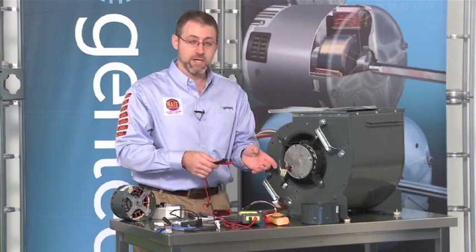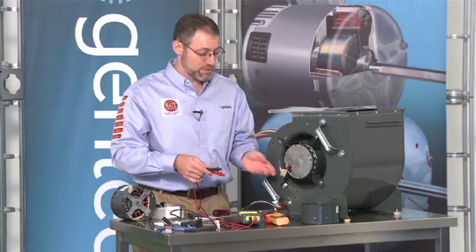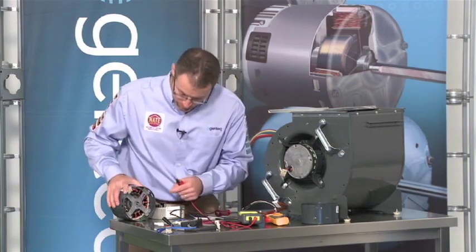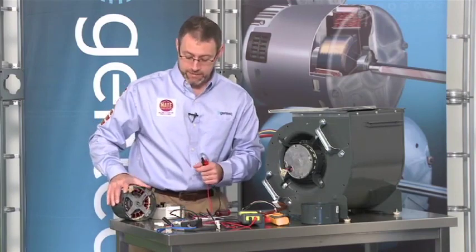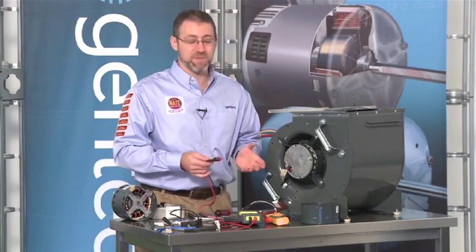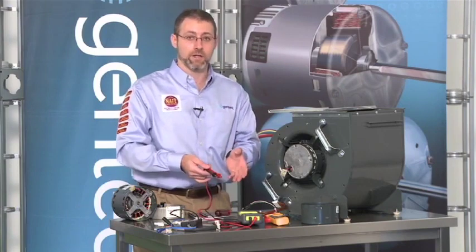If we're reading infinity on all three of our leads, that one check is a good check. That motor passes that check. If any of those readings was less than infinity, really less than 100,000 ohms, then there's some continuity between the windings of the motor and ground, and that would indicate a failed motor, no sense in even doing the second check. It's been my experience that most motors either read infinity or zero on the meter.